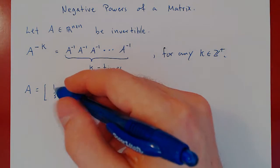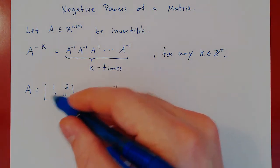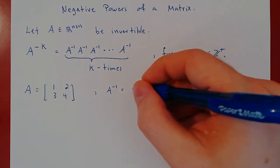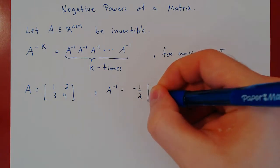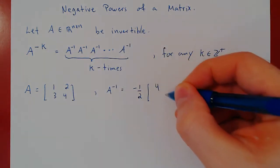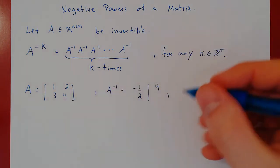1 over AD minus BC, so we get 4 minus 6, that's negative 2, so negative 1 half. So, we flip the diagonal entries, 4, 1, we negate the other 2 entries.